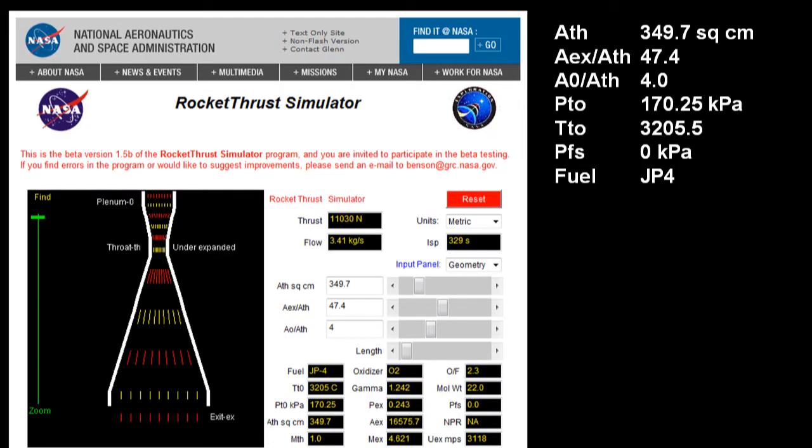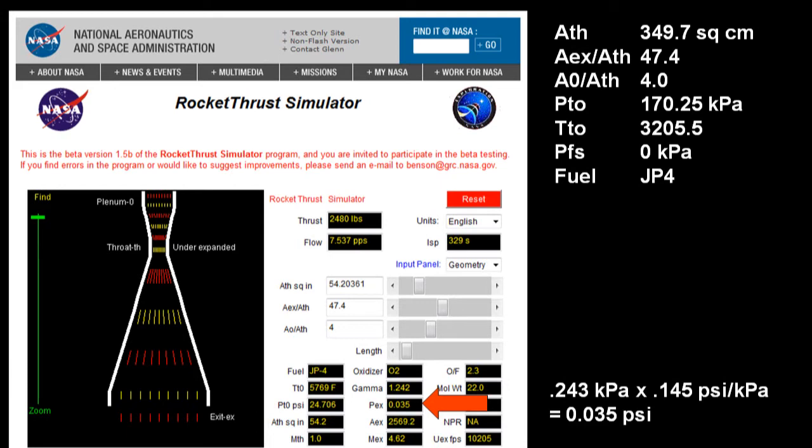you'll see a screenshot of a rocket simulator with parameters for the lunar module descent engine at 30% thrust. Notice the nozzle exit pressure is 0.243 kilopascals? That works out to be 0.035 PSI, which is a quarter of the value for von Braun's 1953 concept rocket.